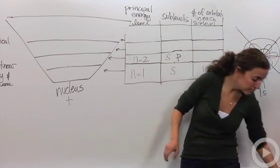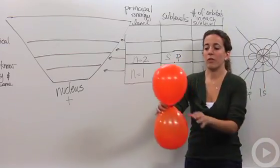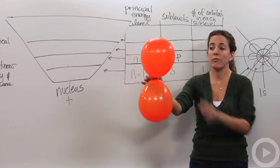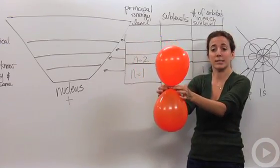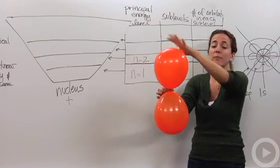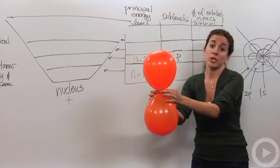P orbitals look slightly different. This is what a P orbital looks like. Even though there are two balloons, this is one P orbital. The nucleus is kind of where the knots are, and electrons can be found either here or here. It looks like a dumbbell shape.